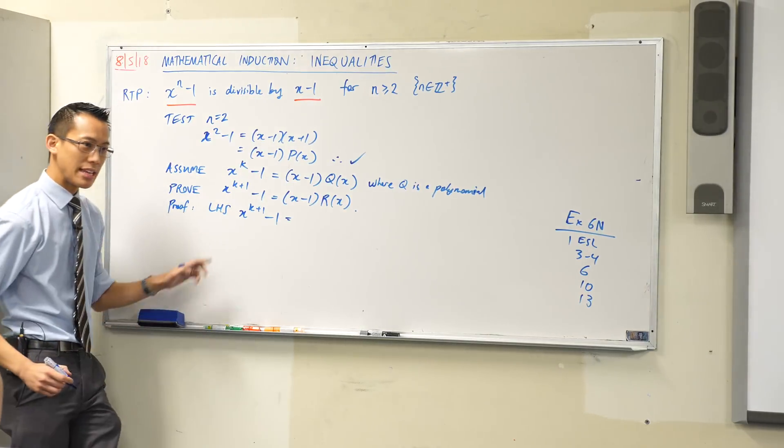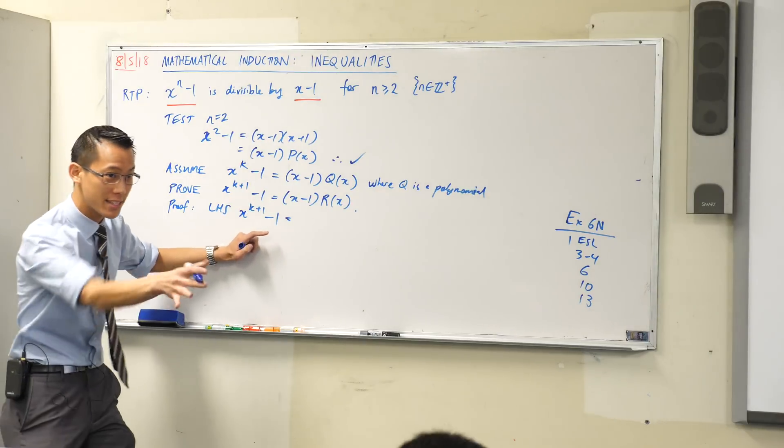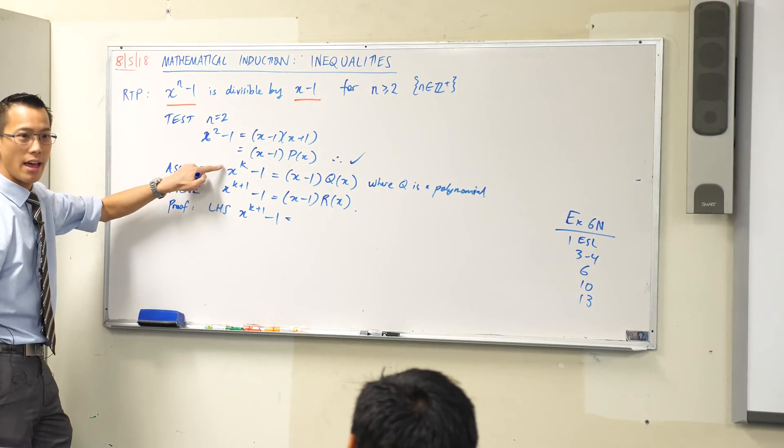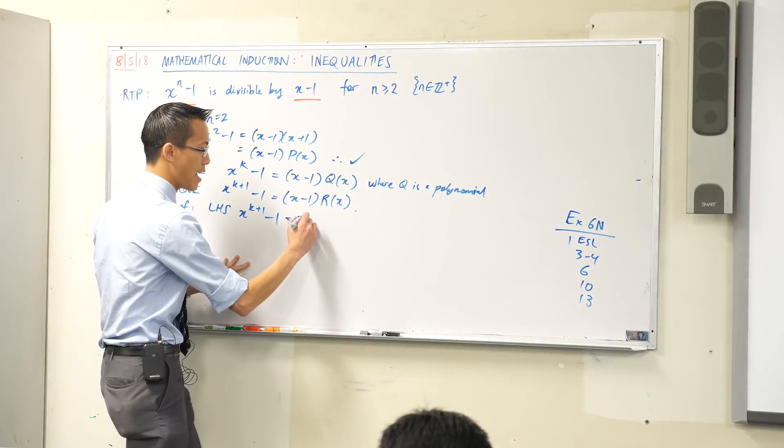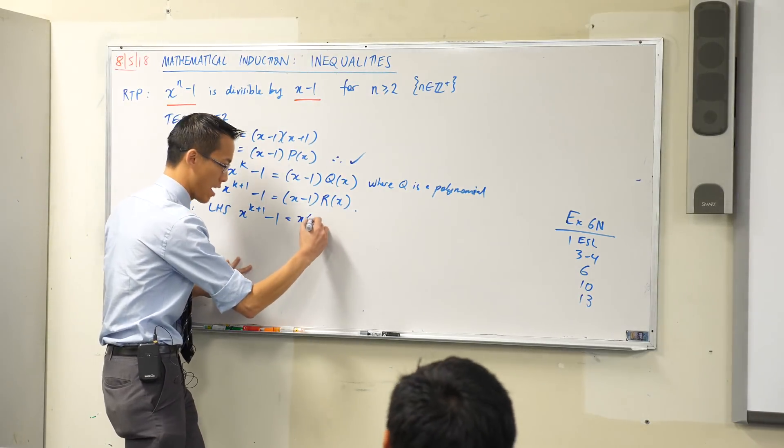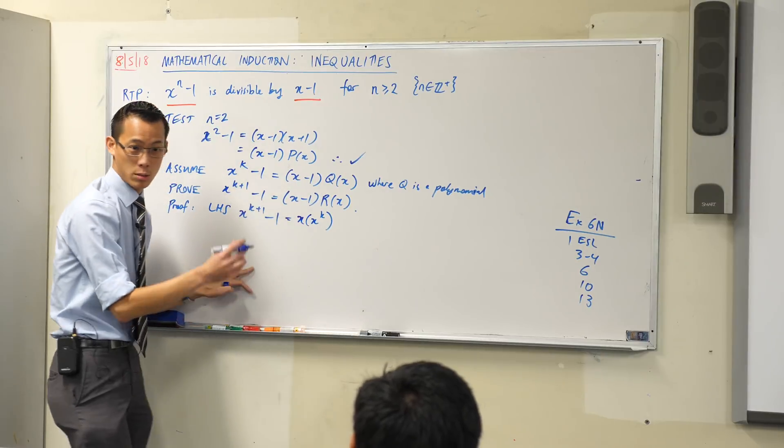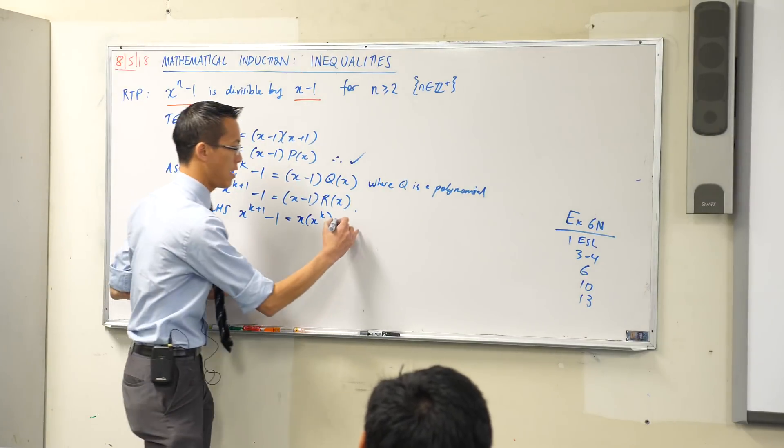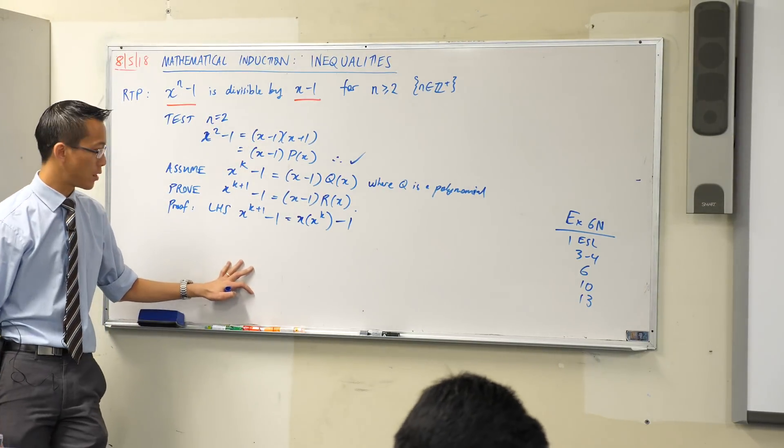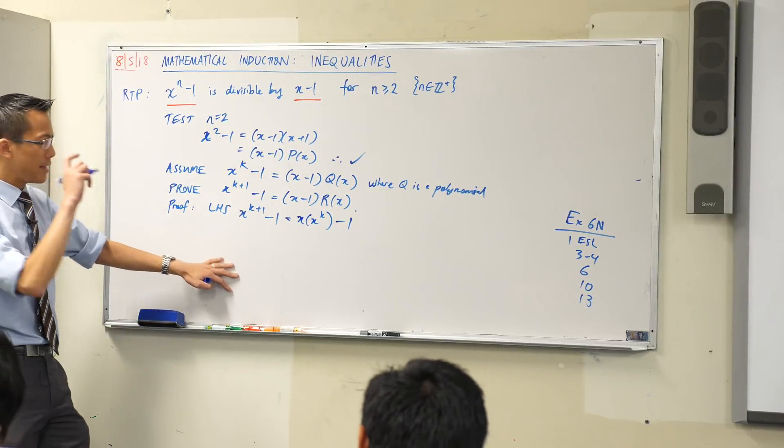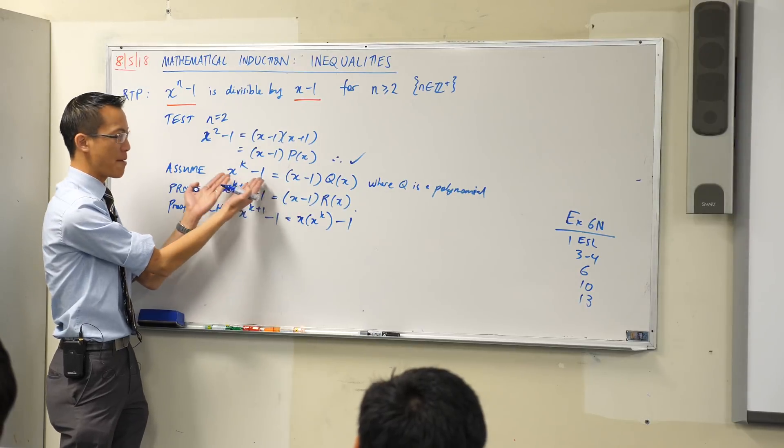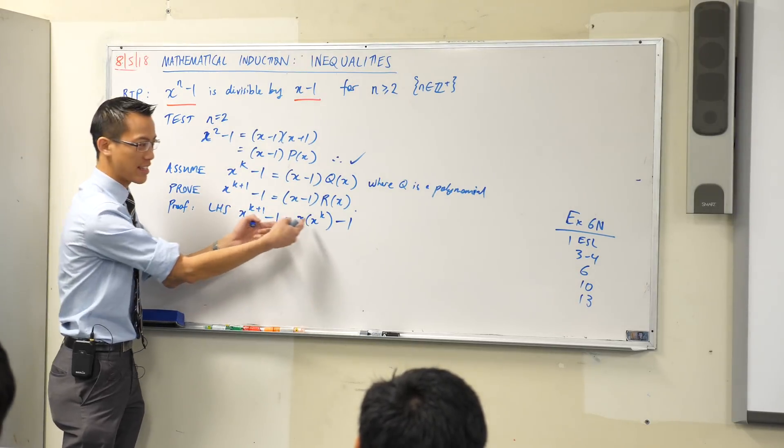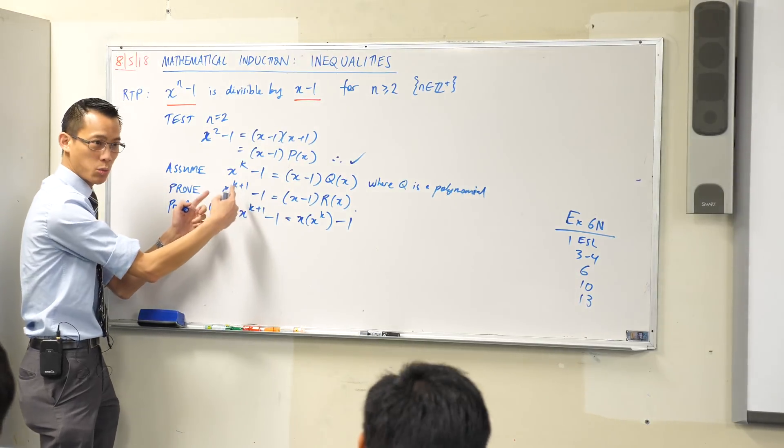Now rewinding back to divisibility proofs, I'm just going to have a look at this left-hand side. Here comes the proof. I'm going to look at this left-hand side and I'm going to try and twist and turn it so that it looks like my assumption. And it doesn't take too much even though it looks really different to what we've been doing numerically. This is the left-hand side. I notice that in this x to the k plus 1 hidden inside there is an x to the k.